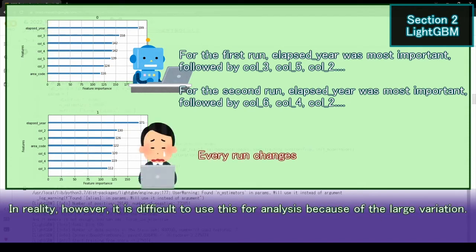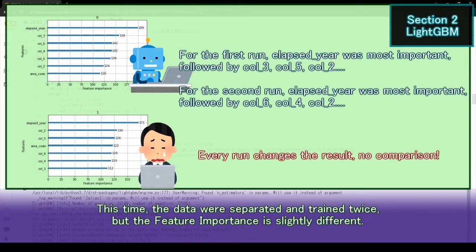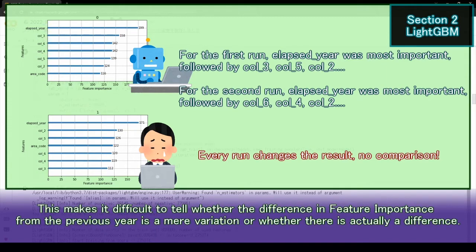In reality, however, it is difficult to use this for analysis because of the large variation. This time, the data was separated and trained twice, but the feature importance is slightly different. This makes it difficult to tell whether the difference in feature importance from the previous year is a mere variation, or whether there is actually a difference.